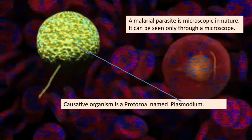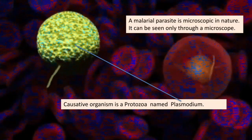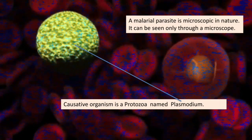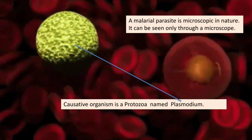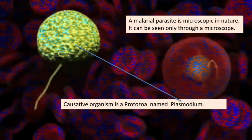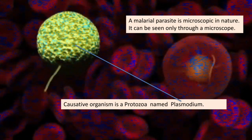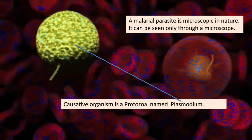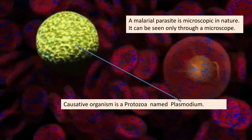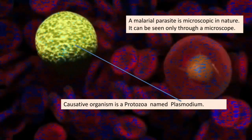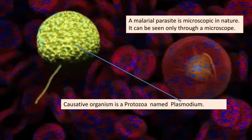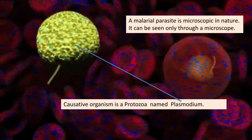The malarial parasite is microscopic in shape and cannot be seen with the naked eye. The causative organism of malaria is a protozoa — a microbe named Plasmodium. By observing the symptoms in a person, he or she may be asked to undergo a blood test.